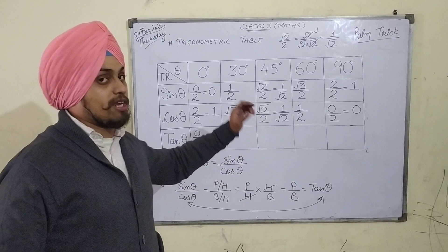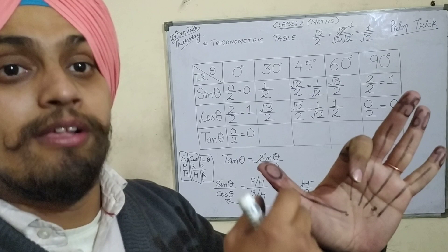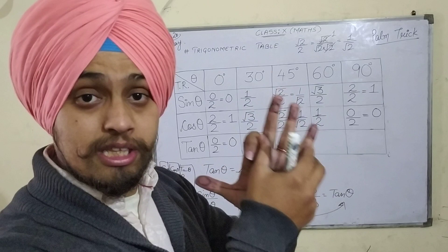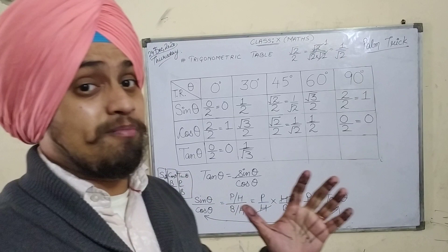Now let's find the value of tan 30 degree. 30 degree is written on this finger. Bend this finger and see how many fingers are to the left of it — that is 1 finger. Take the square root of 1, which equals 1. Now see how many fingers are to the right of it — 3 fingers. Take the square root of 3, which is √3. So the value of tan 30 degree is 1 upon √3.